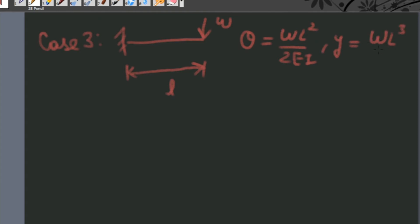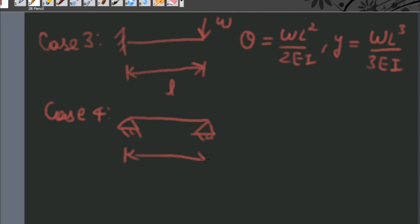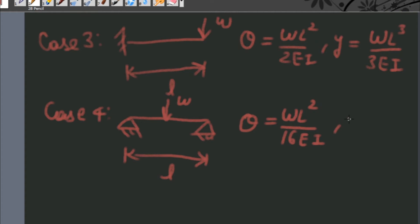Case number four: when a simply supported beam of length L is subjected to a point load W at its midpoint, then the angle of twist theta is given by WL squared upon 16EI, and the deflection Y is given by WL cubed upon 48EI.